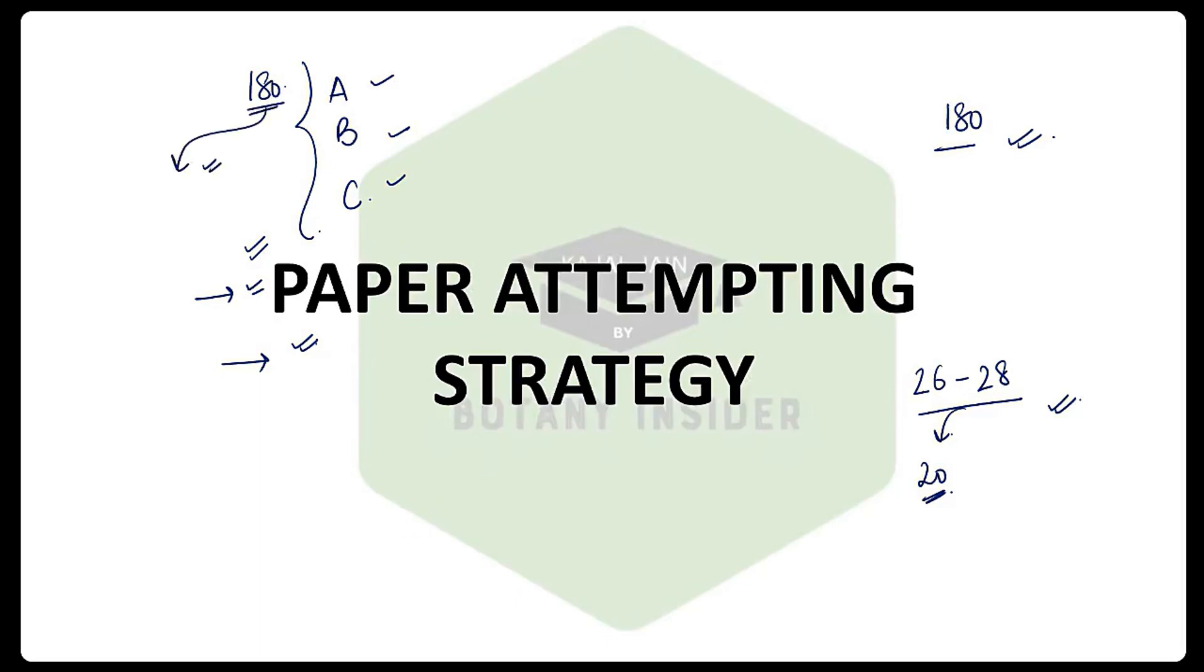Part A is your general aptitude. Part B is your theory segment where the questions are majorly one-liners. Then you have Part C, which is towards the experimental side—match the following, statement-wise. We can call these questions comparatively lengthier than Part B.